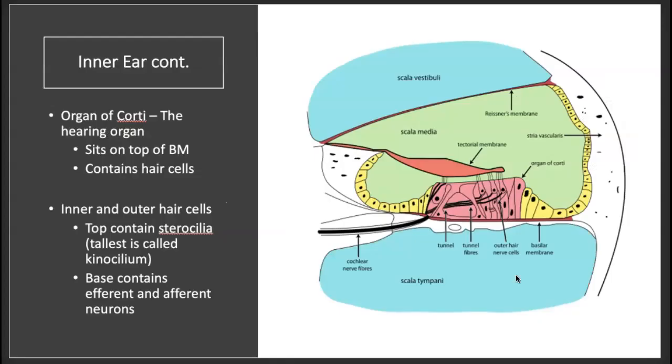Here's the organ of Corti right here. You have three rows of outer hair cells, one row of inner hair cells. You have fluid which is endolymph and a bunch of other structures which we'll get into more later. But just a reminder, this is the sensory area of the cochlea.